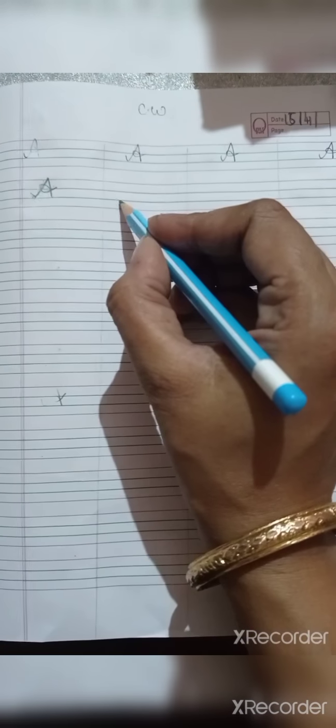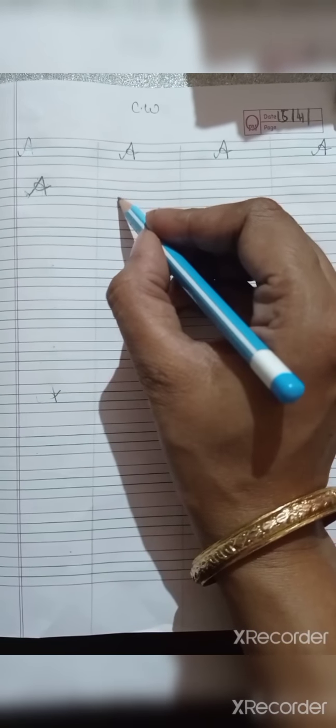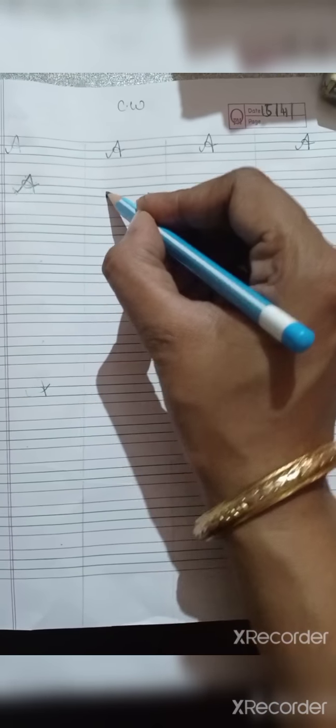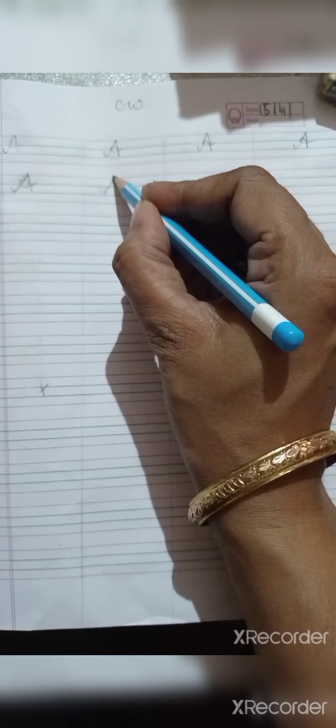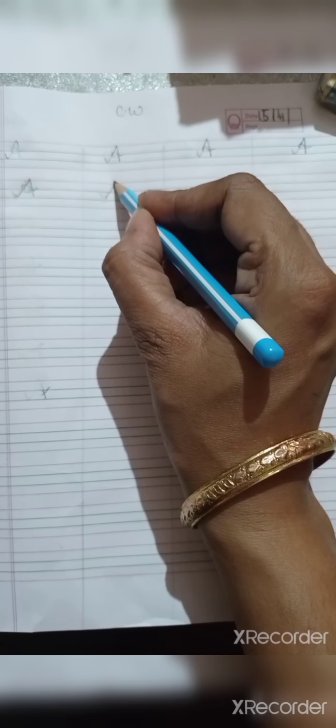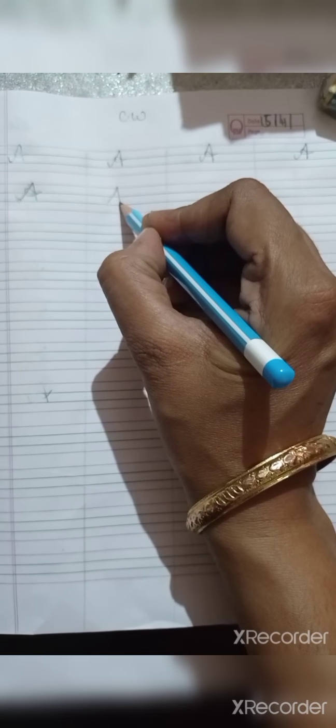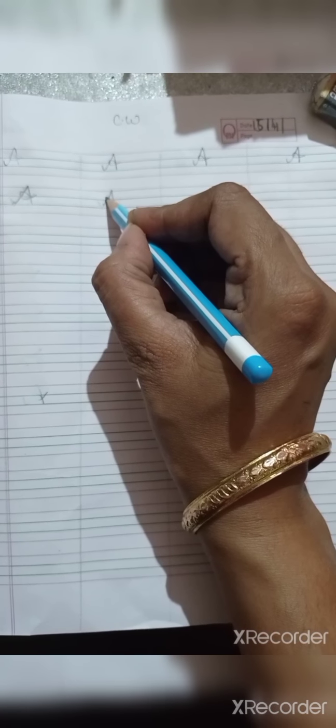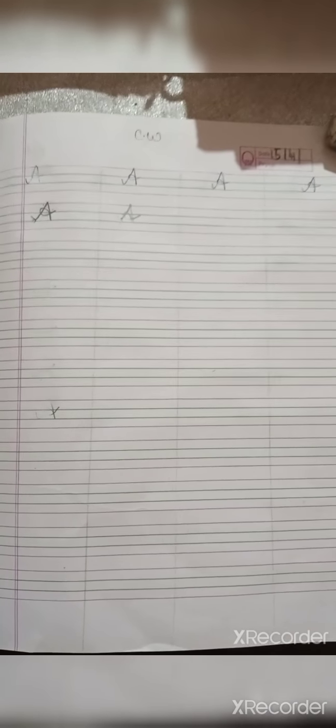One more time. 1, 2, 3. 3 लाइन पर टच करते हैं, make a curve, एक स्मॉल कर्व बनाएंगे. आप, go up, उपर रेड लाइन से टच करना है. Down, come down, नीचे की तरफ आएंगे. फिर, make a turn. Okay, this is a capital cursive A.